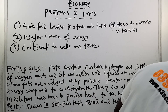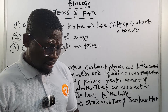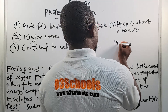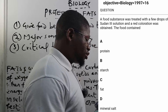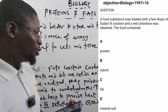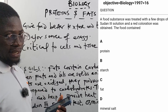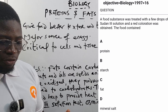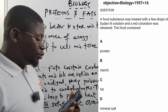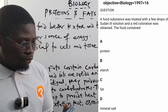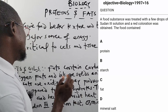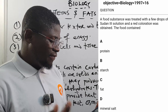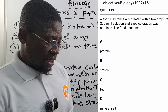Now let's go to the app and answer some questions. JAMB past question 1997 number 16: a food substance was treated with a few drops of Sudan III solution and a red coloration was obtained. The food contains what? Obviously Sudan III tests for fat, so the answer is fat — option C.